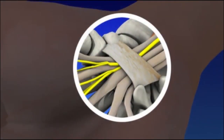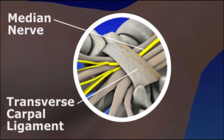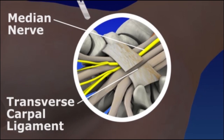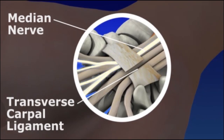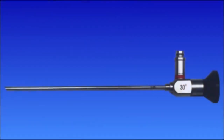All carpal tunnel releases cut the transverse carpal ligament, which forms the roof of the carpal tunnel, taking pressure off the median nerve. Endoscopic surgery uses an endoscope, a thin instrument to visualize internal areas, to diagnose problems and make surgical repairs without having to make large incisions.